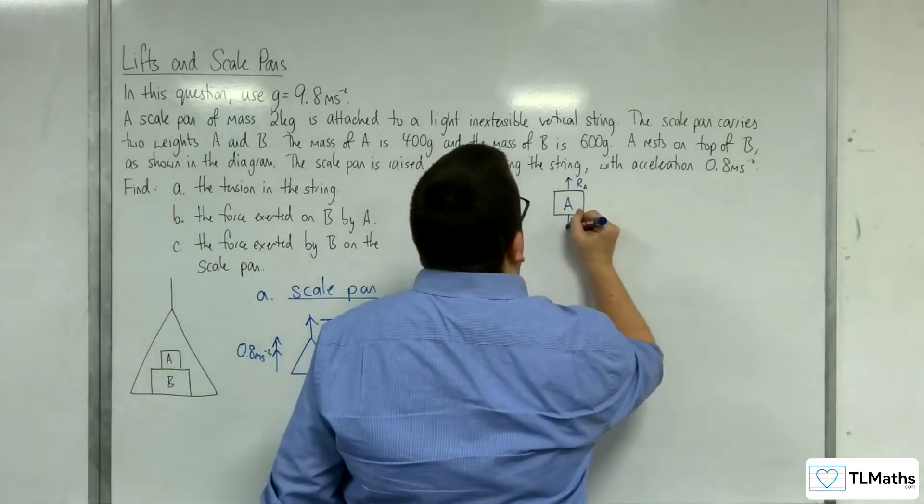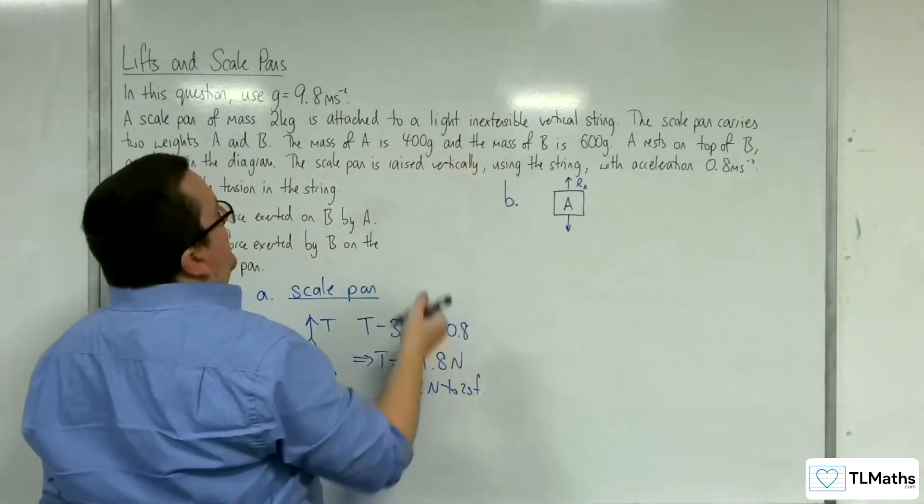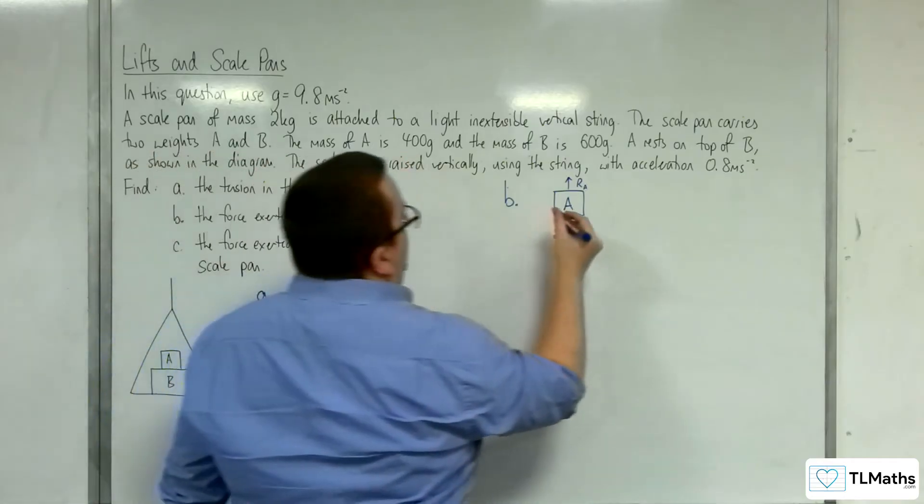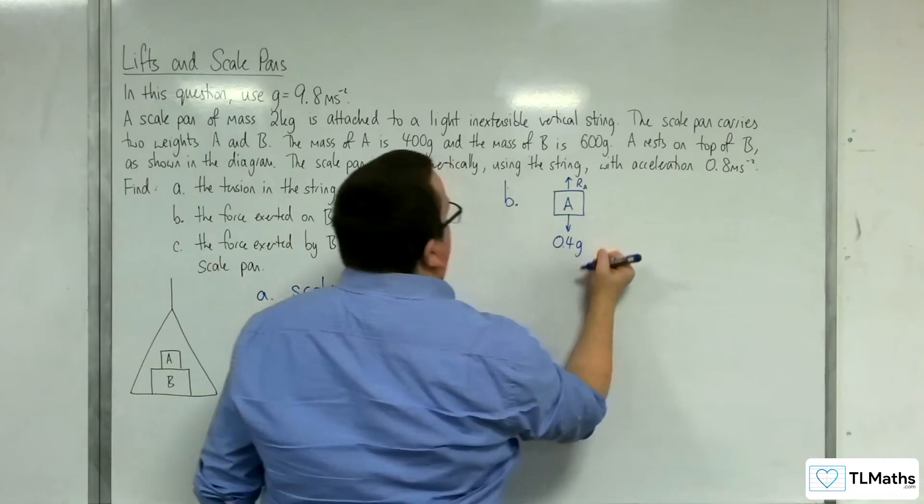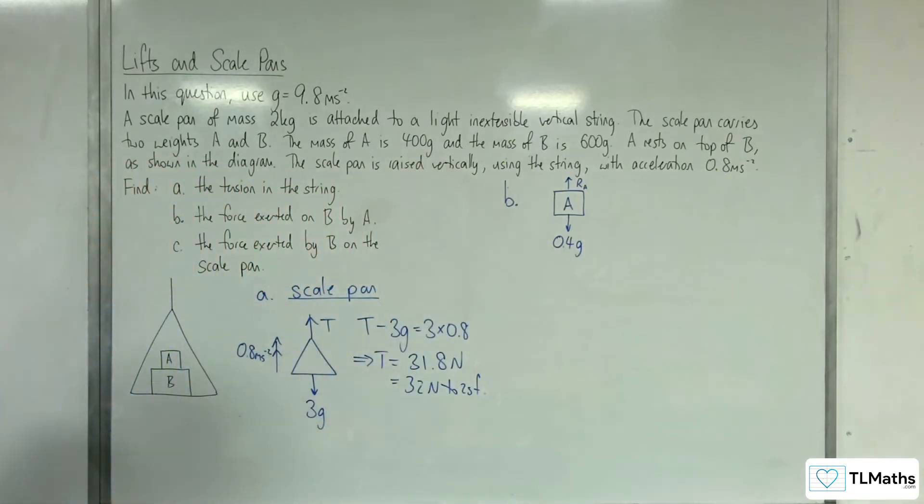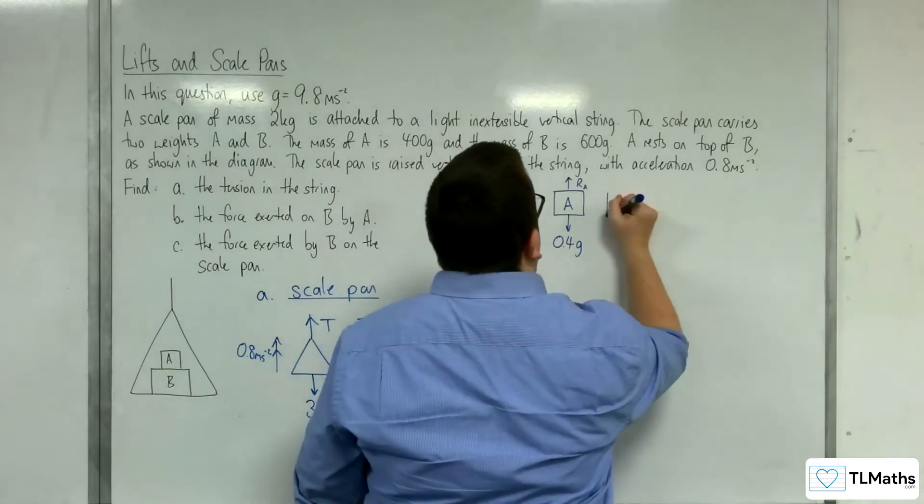And we'll have its weight working vertically downwards. Now its mass is 400 grams, so this must be written in kilos, so 0.4g working vertically downwards. And it's accelerating upwards at 0.8 metres per second per second.